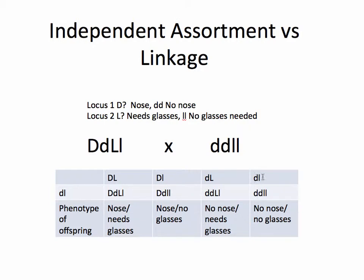These represent the alleles carried by each of the four possible gametes. Now, this other parent is pretty easy because it's a double homozygous recessive individual — the only possible gamete is little d, little l. So when we combine all the eggs with all the sperm possibilities, we end up with four possible genotypes, all expected to be equally frequent.